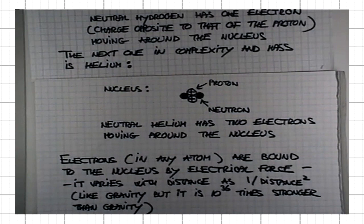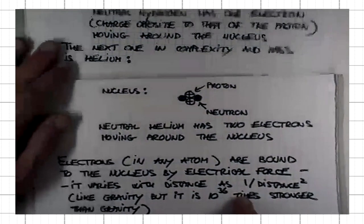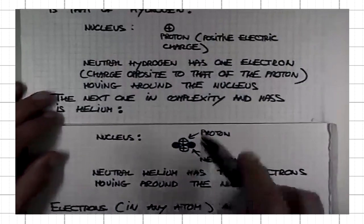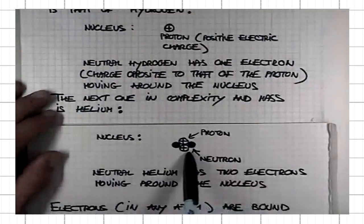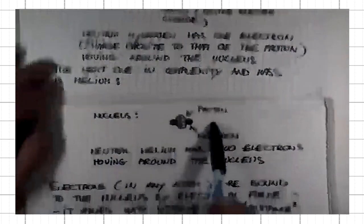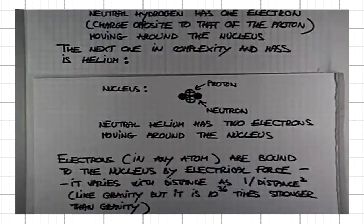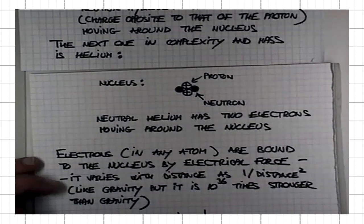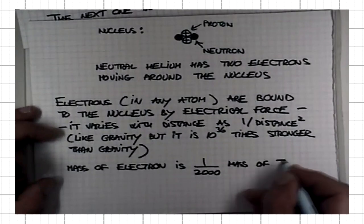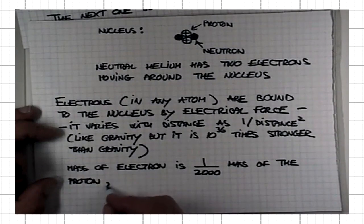The gravitational attraction between subatomic particles plays no role in the properties of atoms. Electrons are actually very light — about 1 over 2,000 the mass of the proton. All the mass is in the nucleus.